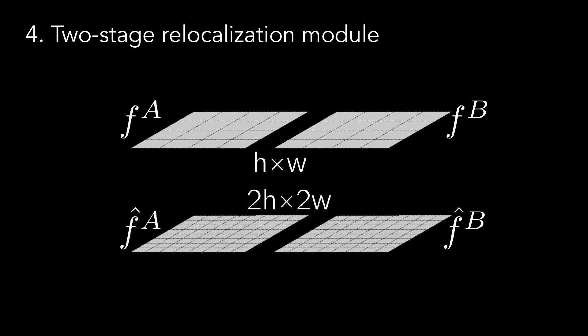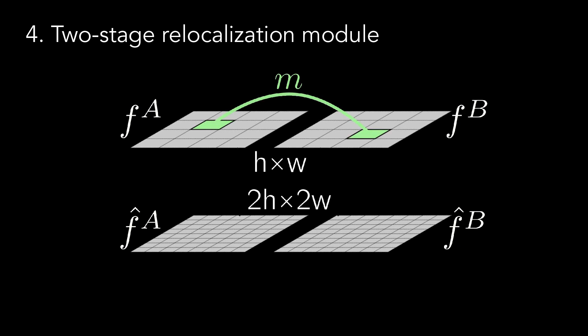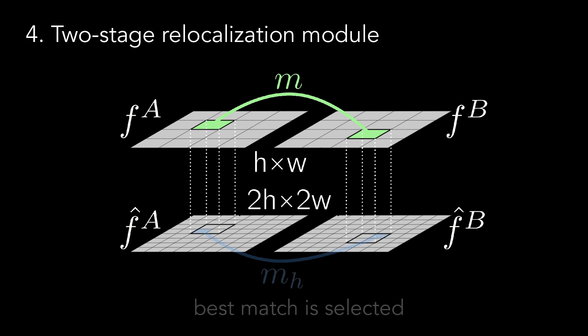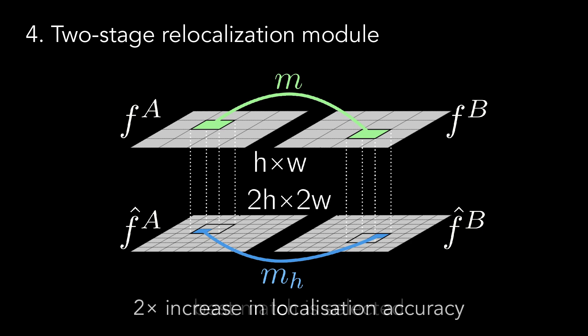To this end, we first compute auxiliary densely extracted features, which are obtained along a finer grid of 2H times 2W. Then, given a match M, we analyze the local 2 times 2 higher resolution feature regions and select the best match among them. This hard relocalization step can improve the localization accuracy by a factor of 2.